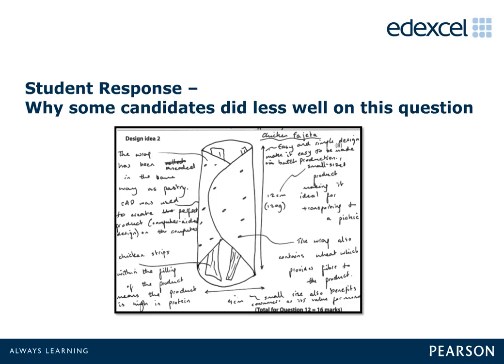Candidates who planned their answers carefully were rewarded with high marks because they used the specification as a checklist to ensure they covered all the points. I will briefly list the main points for consideration for each specification point. 1. Pastry technique: the most common answer was puff and shortcrust, but a lot included rubbing in and folding as the technique.